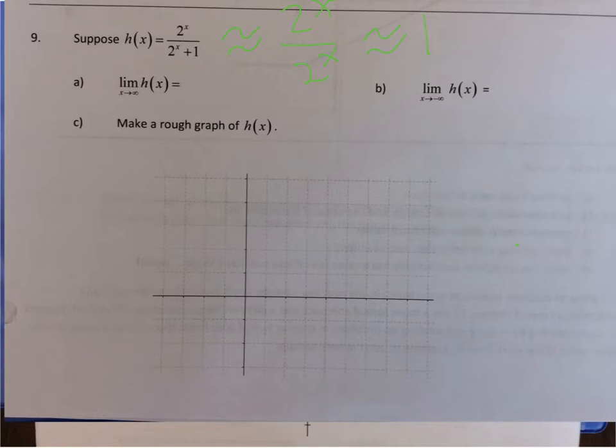So if h(x) is just essentially 1, then the limit as x approaches infinity of h(x), well that's going to be 1.